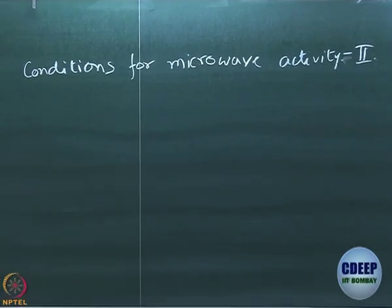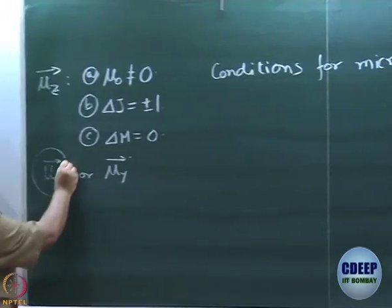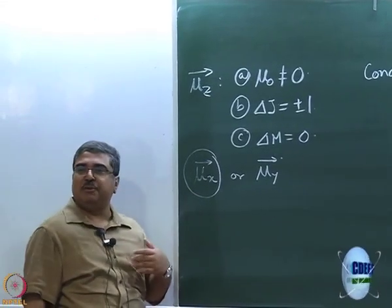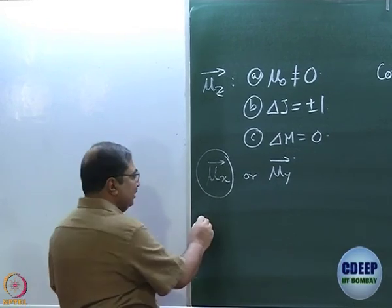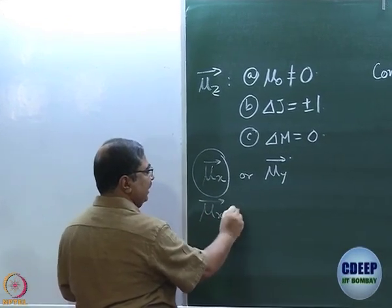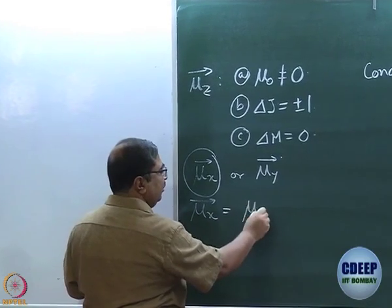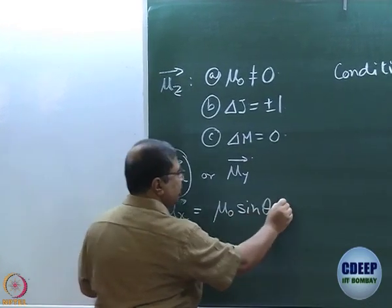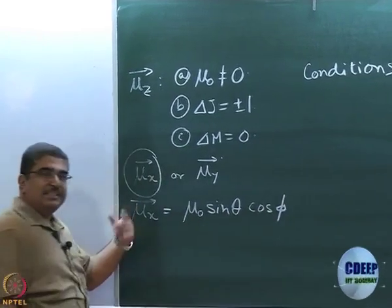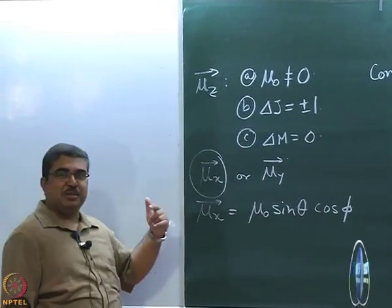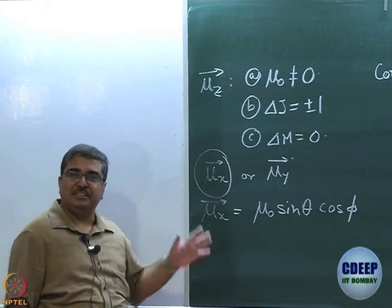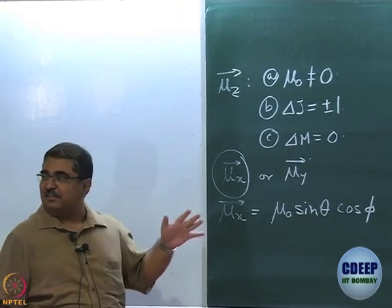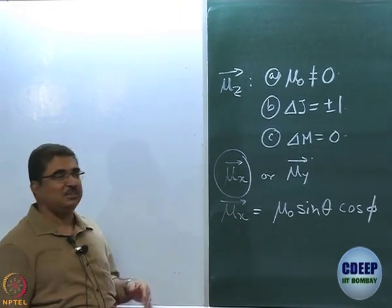We start with the known premise — the transition moment integral — but suppose we are now interested in μX. I'm only going to work out μX because μY follows exactly the same kind of discussion. What is μX? You told me in the previous class: μ₀ sinθ cosφ. Right away you can see that our discussion is going to be a little more complicated than it was for the Z component, but not impossible.